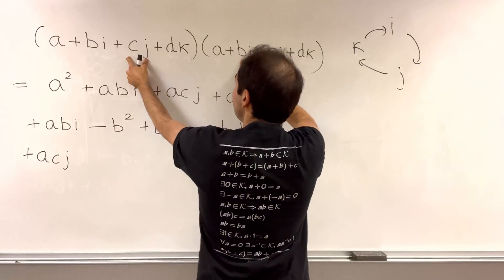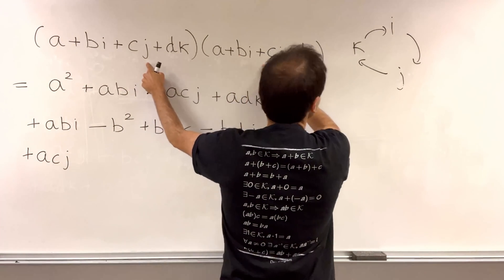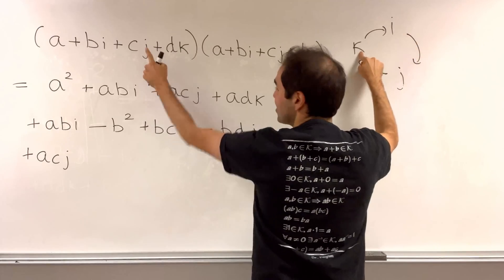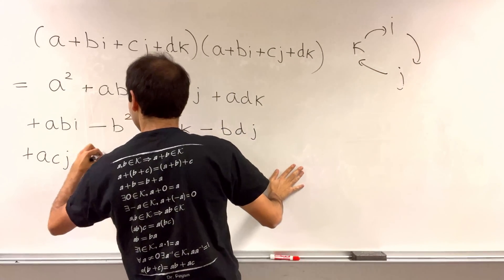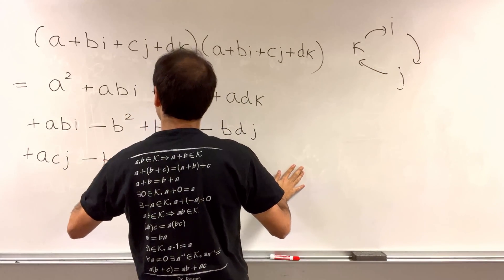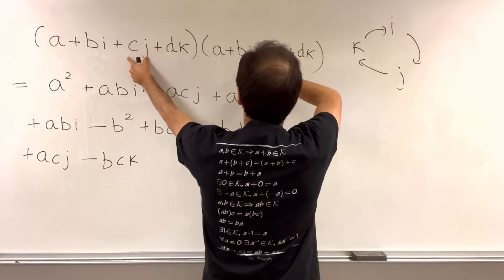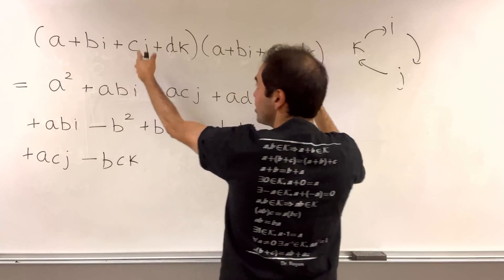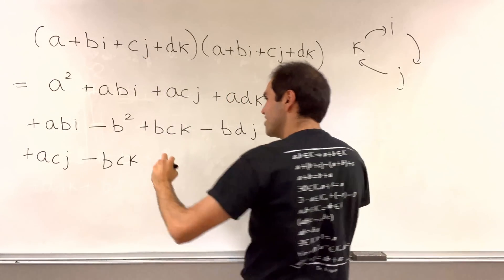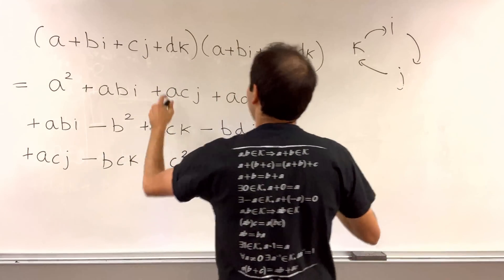All right, now cj times cj, a nice name, but it's minus c squared.